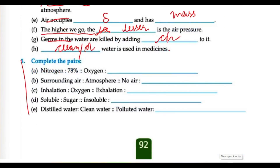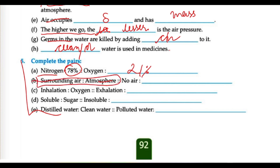Complete the pattern: nitrogen is 78%, so oxygen is 21%. The surrounding air around us is called the atmosphere. Where there is no air at all, we call that a vacuum. We inhale oxygen, and what do we exhale? Carbon dioxide.